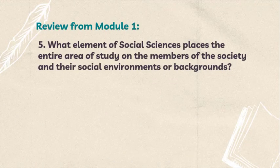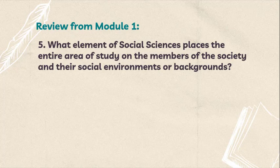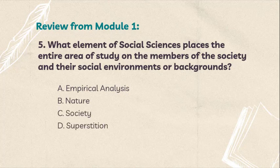Question number 5: What element of social sciences places the entire area of study on the members of the society and their social environments or backgrounds? A. Empirical Analysis. B. Nature. C. Society. D. Superstition. The answer is society, letter C.